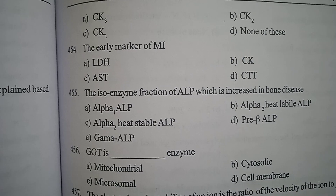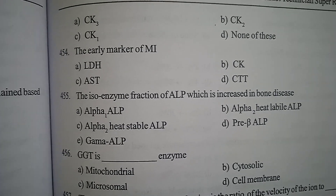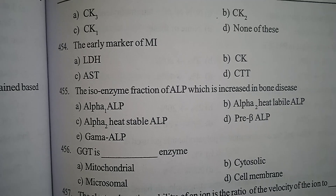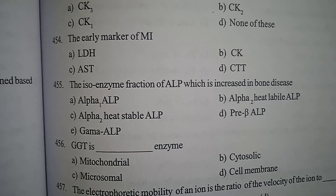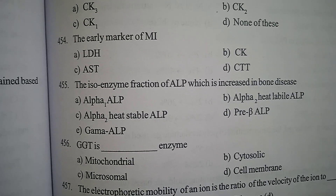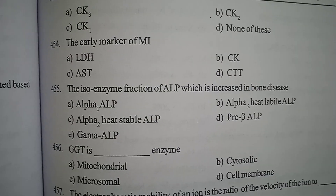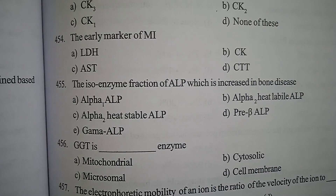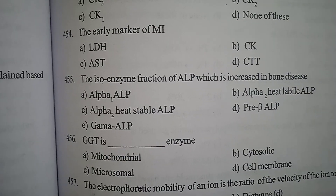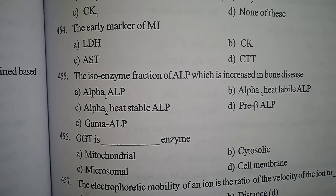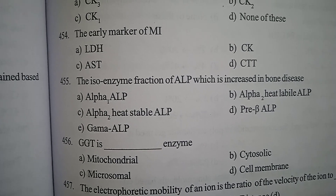Question 10: The isoenzyme fraction of ALP (alkaline phosphatase) which is increased in bone disease — Option A: Alpha 1 ALP, Option B: Alpha 2 heat labile ALP, Option C: Alpha 2 heat stable ALP, Option D: Pre-beta ALP, Option E: Gamma ALP. Correct answer: Option D, Pre-beta ALP, which is increased in bone disease.